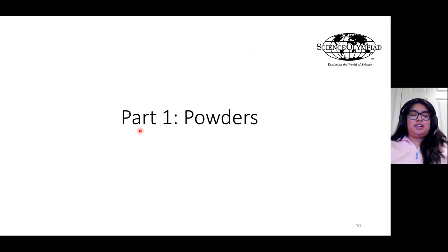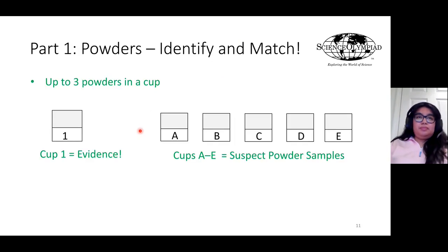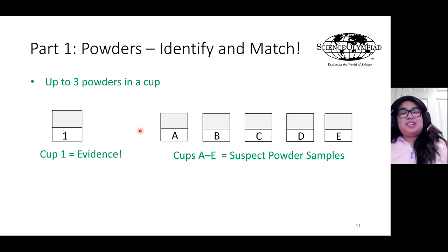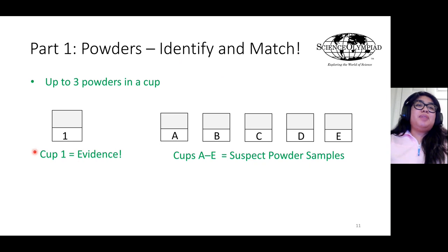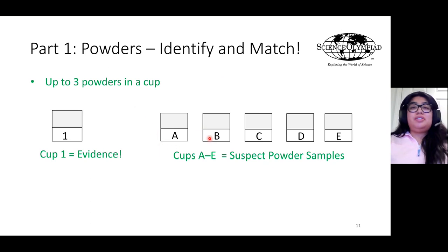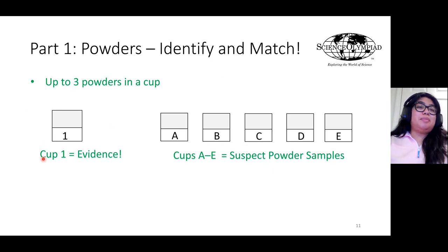Moving on to the powder identification part: you have to identify and match the powder found at the evidence to one or more of the powder samples given by suspects A through E. There can be up to three powders in one cup — for instance, three powders in cup A, two in cup B, one in cup C. You have to match the identity of the powder or powders in cup one to the suspects' cups.